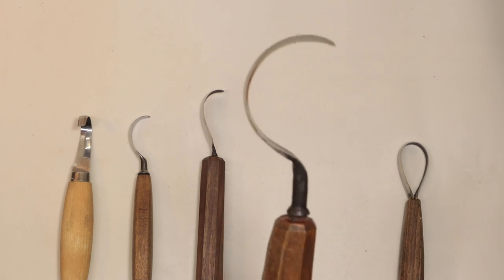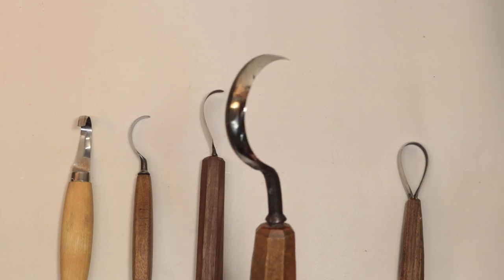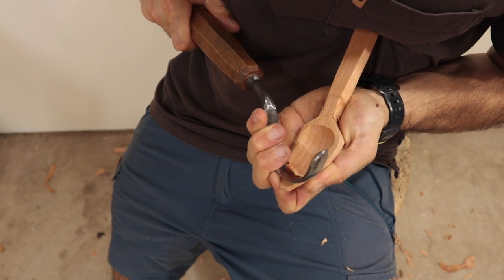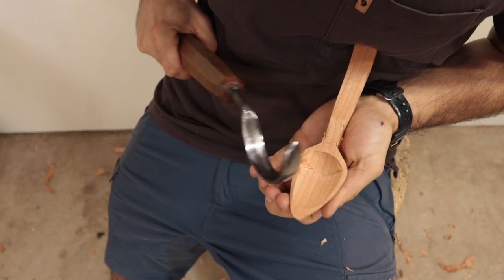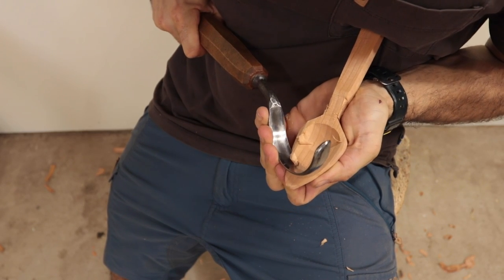My most used hollowing tool is this 70 millimeter Tuka Cam from Hans Carlsson. The large radius gives a more gentle sweep, and it makes cosplaying Captain Hook a lot easier. It's a great hook knife.